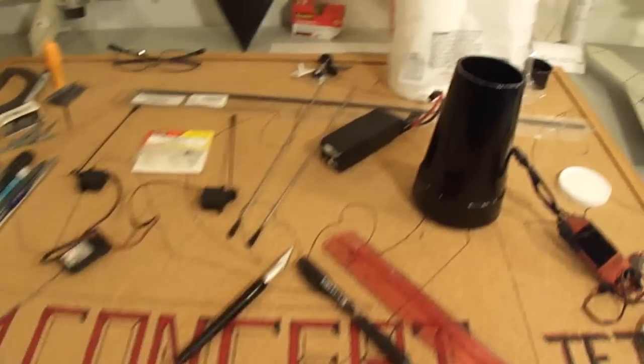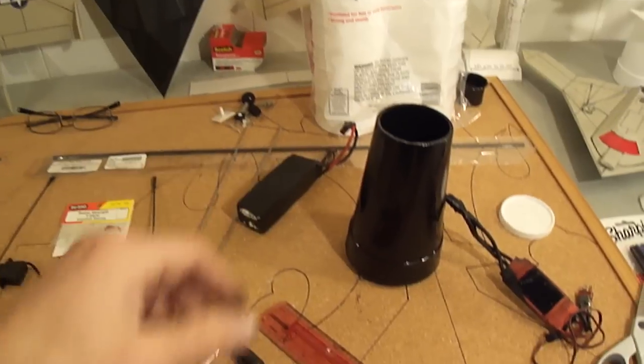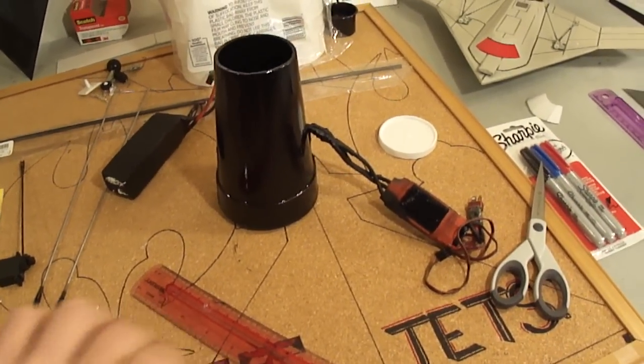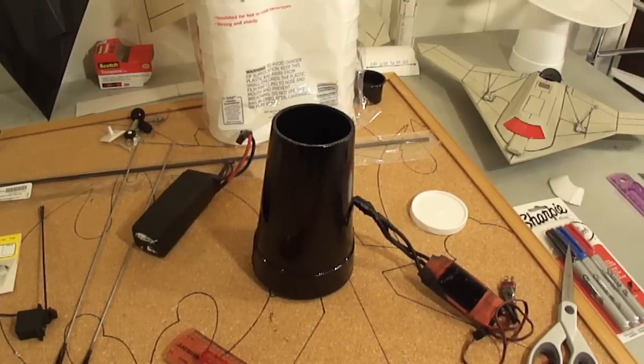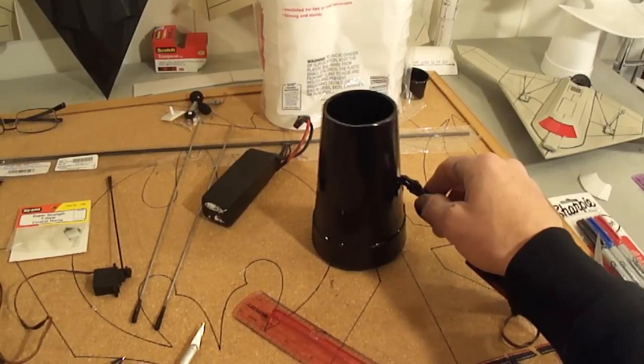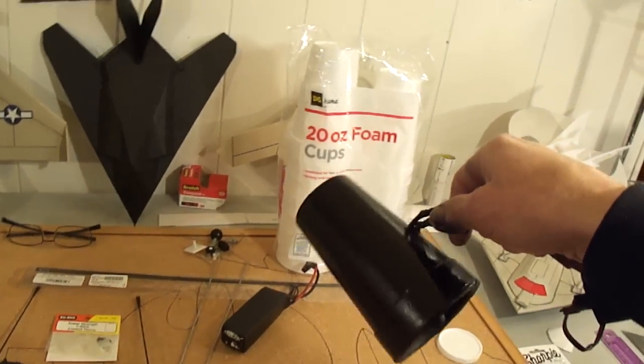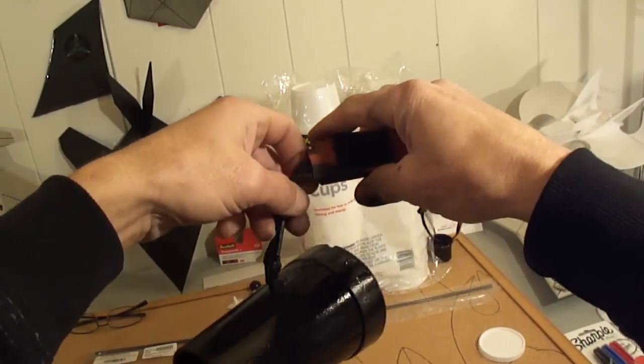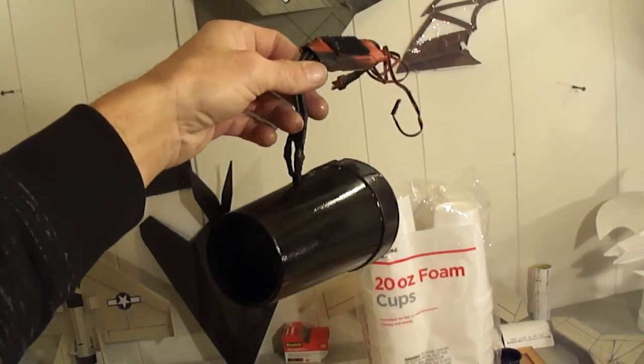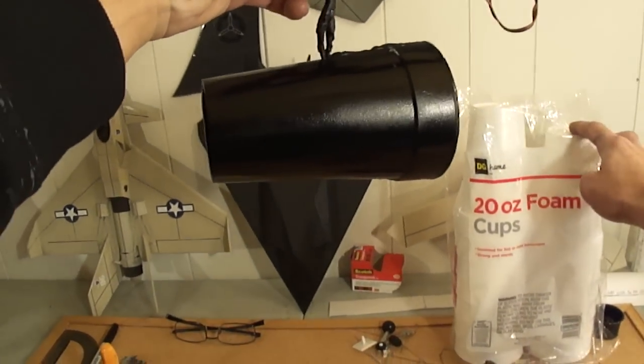And you'll get about five minutes, five to six minutes of flight time on this whole system here. Which ain't too bad. There you've got your 70mm EDF unit placed inside your thrust tube that you made out of a dollar store foam cup.